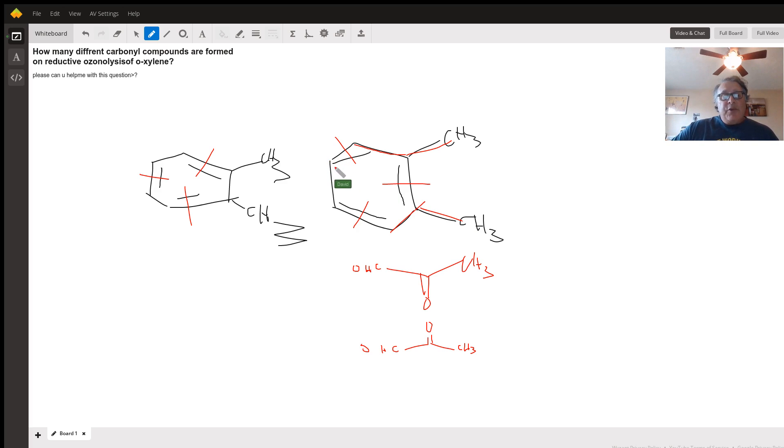And then what we have is we're going to have this piece here, which is just going to be CHO, CHO. So two different carbonyl compounds come from the reductive ozonolysis of ortho-xylene from the right-hand resonance form.